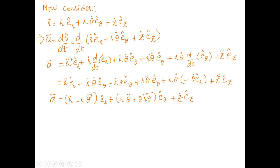For acceleration, we differentiate the velocity expression again with respect to time, applying the product rule to each of the three terms. Combining all resulting terms under ê_r, ê_θ, and ê_z gives the acceleration expression in cylindrical polar coordinates.